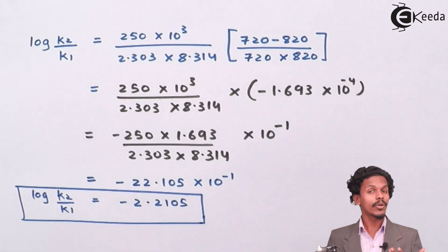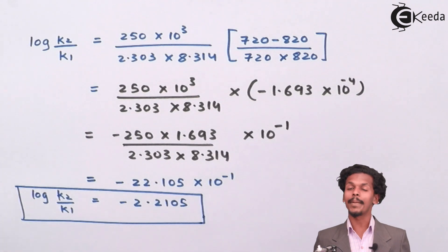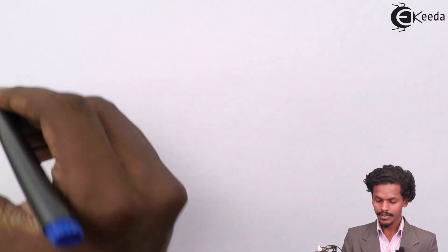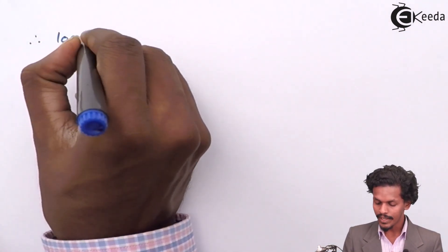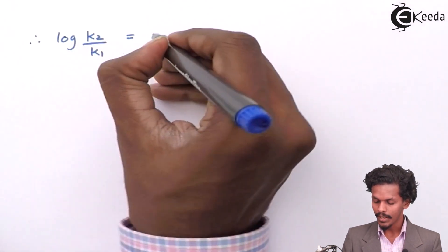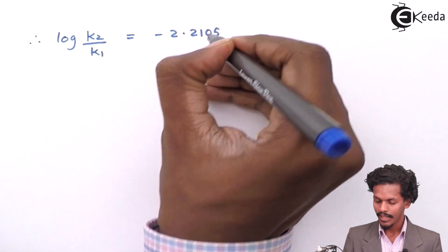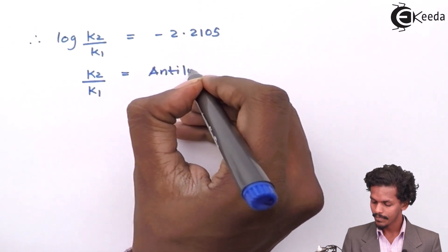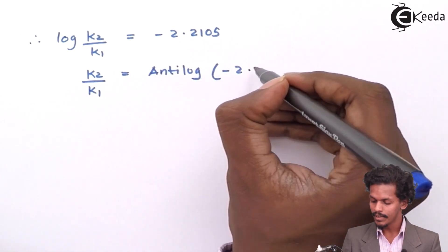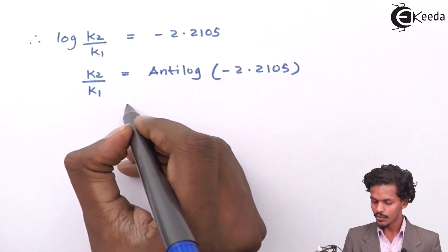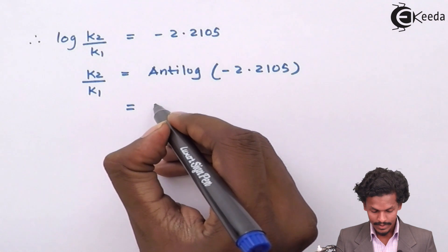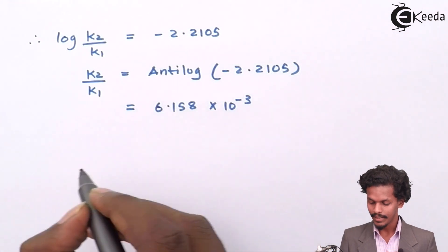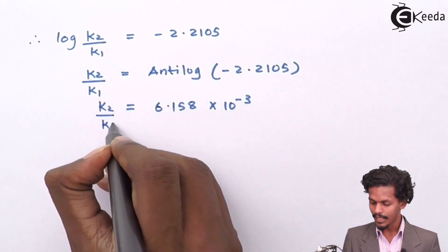We have to calculate the value of K2 divided by K1, so we apply antilog. Therefore, log of K2 divided by K1 equals minus 2.2105 means K2 divided by K1 equals antilog of minus 2.2105, which gives 6.158 into 10 raised to minus 3. This is the value of K2 divided by K1.